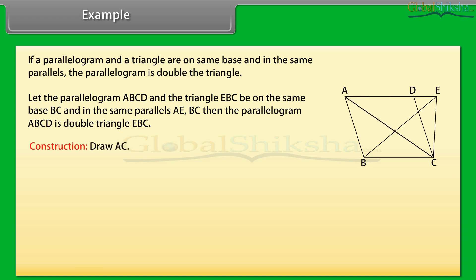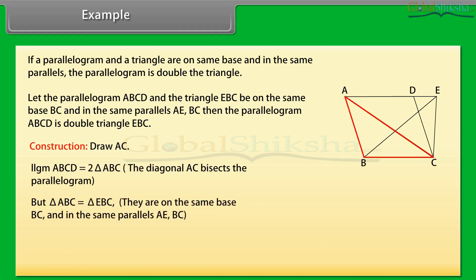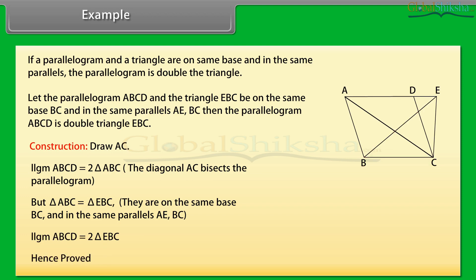Then parallelogram ABCD is double triangle EBC. Construction: Draw AC. Since AC bisects the parallelogram, therefore parallelogram ABCD is double triangle ABC. But triangle ABC equals triangle EBC because they are on the same base BC and between the same parallels AE and BC. Therefore, parallelogram ABCD is also double triangle EBC. Hence proved.